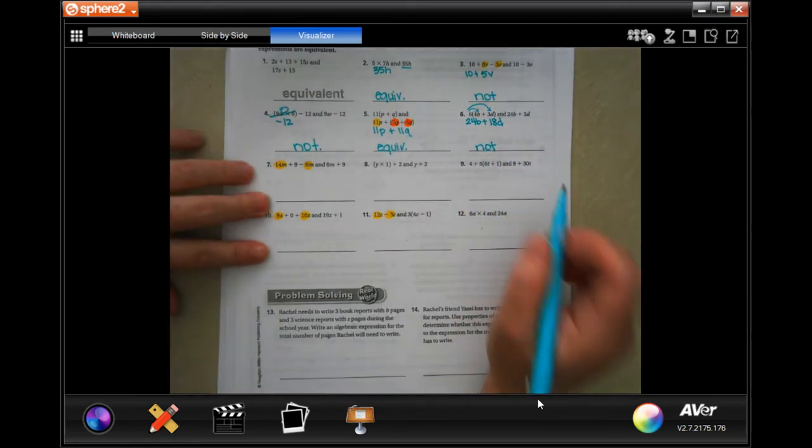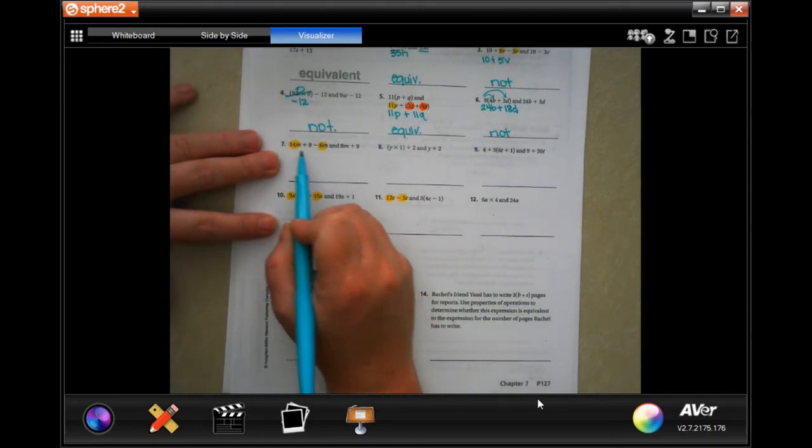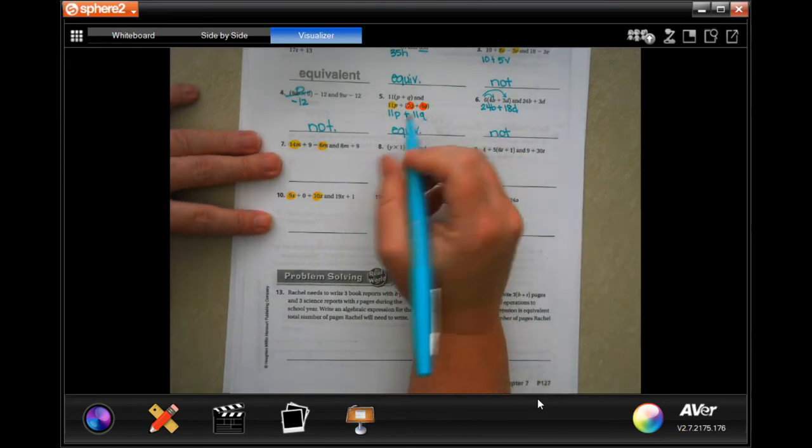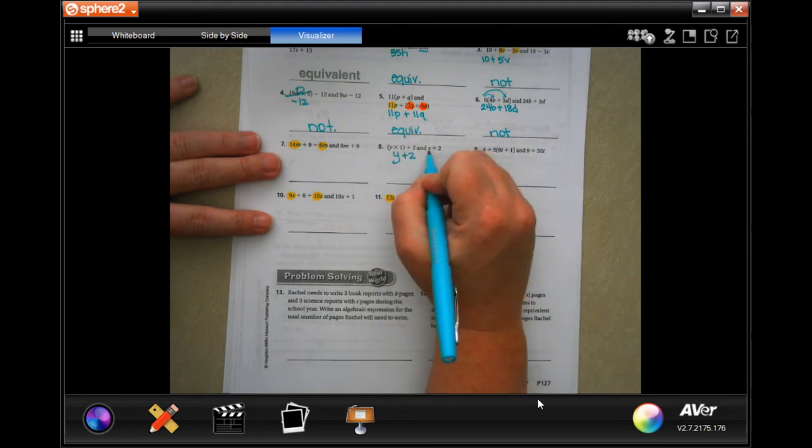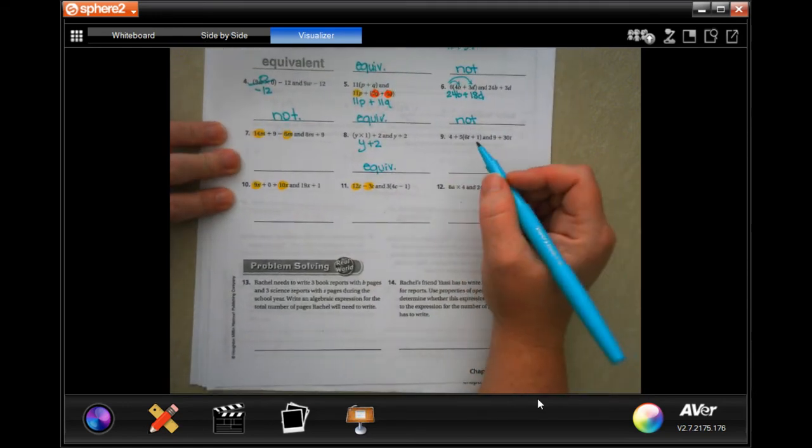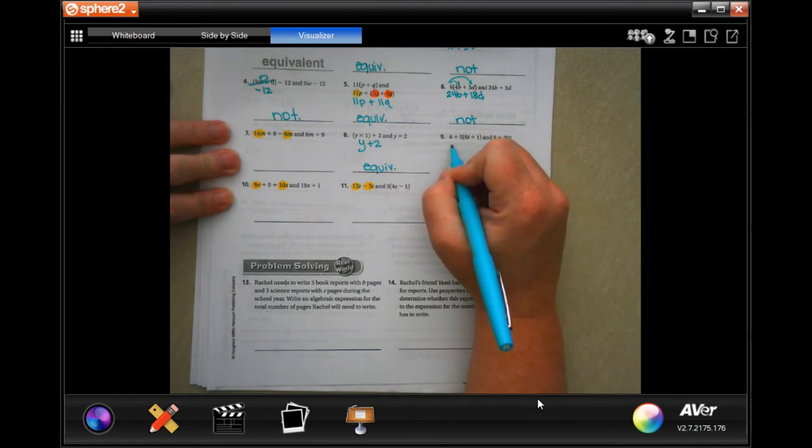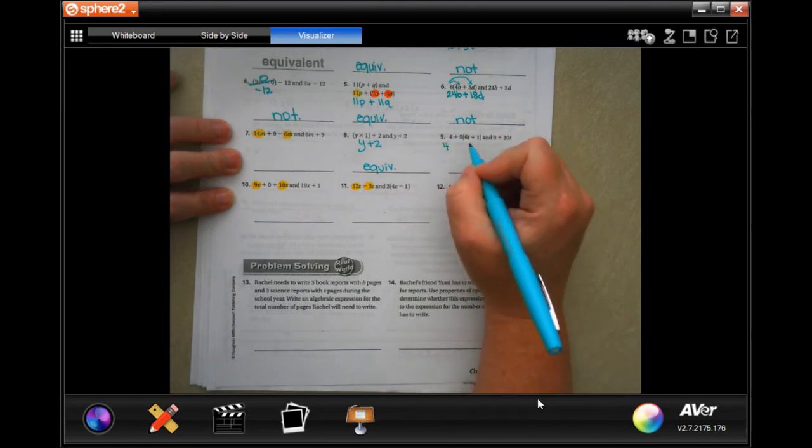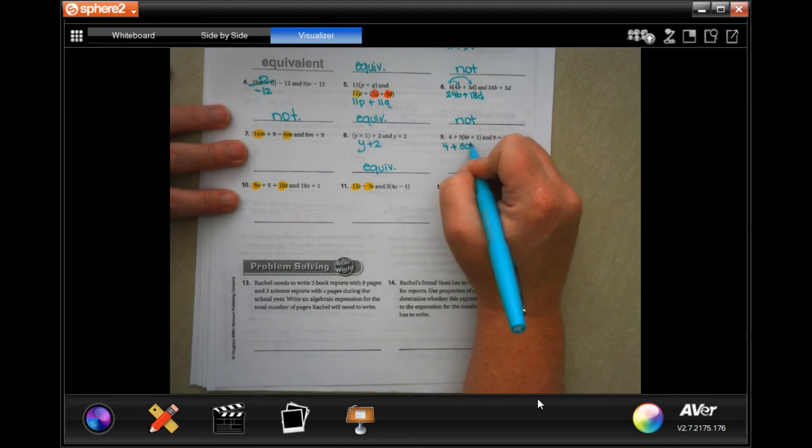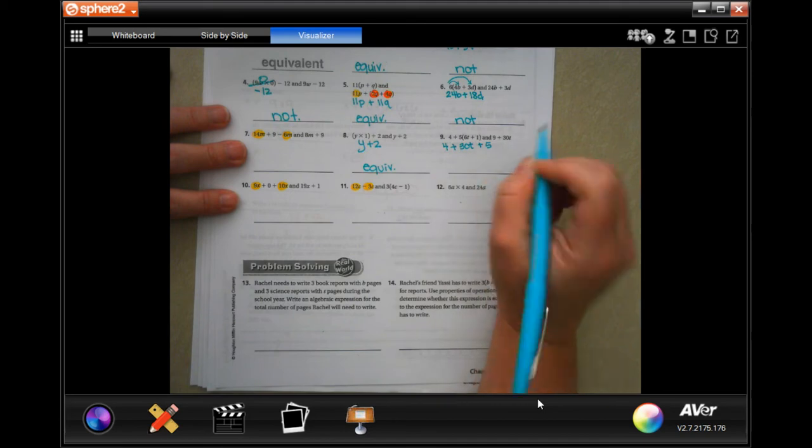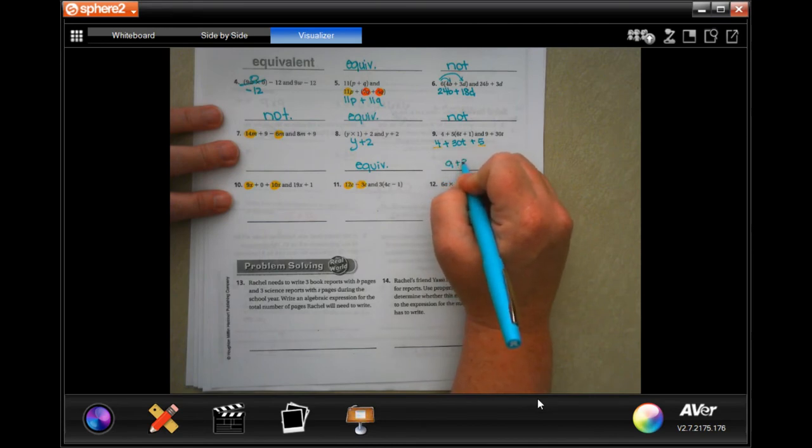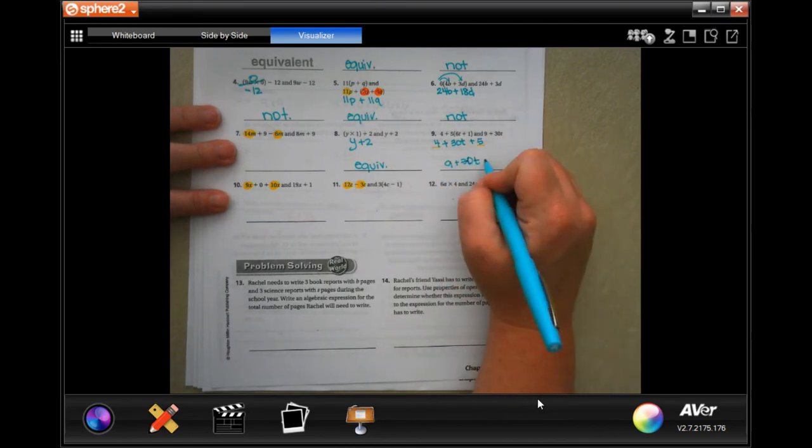You guys are going to do number 7. Number 8, I'm going to help you with only for just a second, because y times 1 is the same thing as y, plus 2, which is the same as y plus 2. So that one's going to be equivalent. This one is a tough one, but you guys can totally do it. So you're going to have 4. I'm going to go through, I'm going to do the multiplying, and then I'll highlight my like terms and combine. Plus 5 times 6 is 30, and I'm going to keep the t, plus 5 times 1. So now, like terms, 4 and 5. Well, 4 and 5 are 9 plus 30t, so that's equivalent.